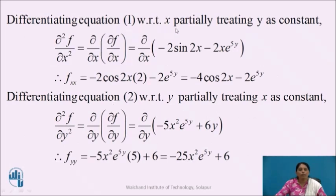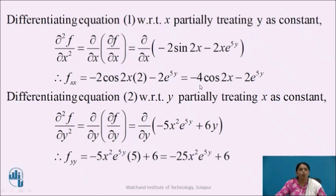Differentiating equation 1 with respect to x partially, treating y as constant, gives us ∂²f/∂x². So ∂/∂x of (−2sin(2x) − 2x·e^(5y)): f_xx = −2 × cos(2x) × 2, minus 2·e^(5y) into 1 since e^(5y) is constant and the derivative of x is 1. So we get f_xx = −4cos(2x) − 2e^(5y).